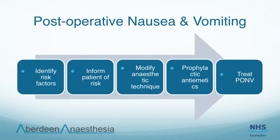Postoperative nausea and vomiting affects up to 40% of patients. It is unpleasant and can lead to delayed hospital discharge. In severe cases it can cause wound dehiscence, bleeding, oesophageal rupture or fluid and electrolyte disturbance. Risk factors include patient factors such as female sex, non-smokers, young age, anxiety, history of motion sickness and previous PONV; anaesthetic factors such as the use of volatile anaesthetics, opioids and nitrous oxide; and surgical factors such as emergency surgery, ENT surgery, gynaecology procedures and gastrointestinal surgery. In the unconscious or semi-conscious patient with postoperative nausea and vomiting, immediate action should be taken as aspiration of vomitus into the lungs may occur. These patients should be placed in the lateral position and suction used to clear the pharynx.